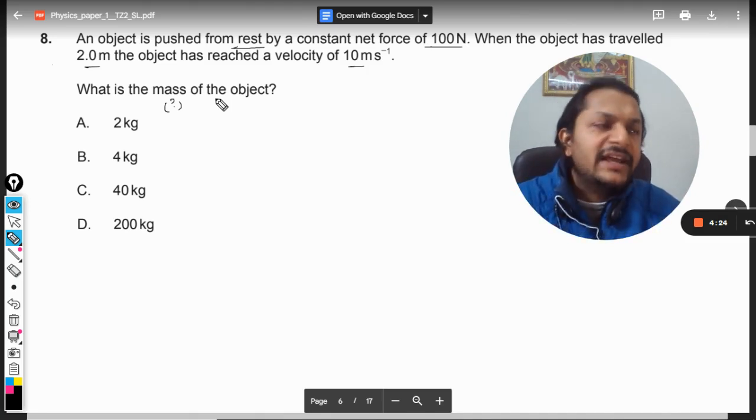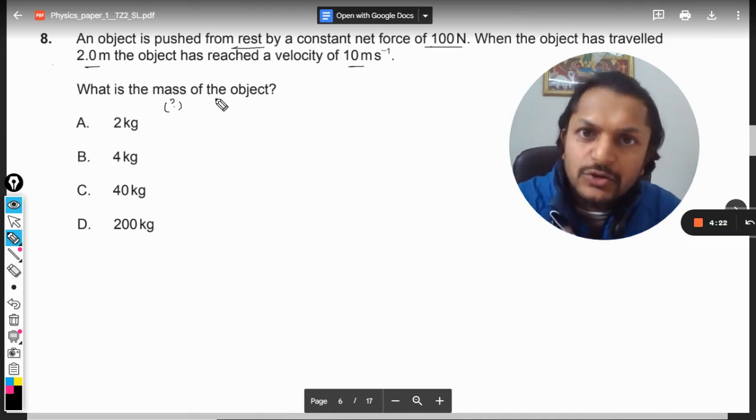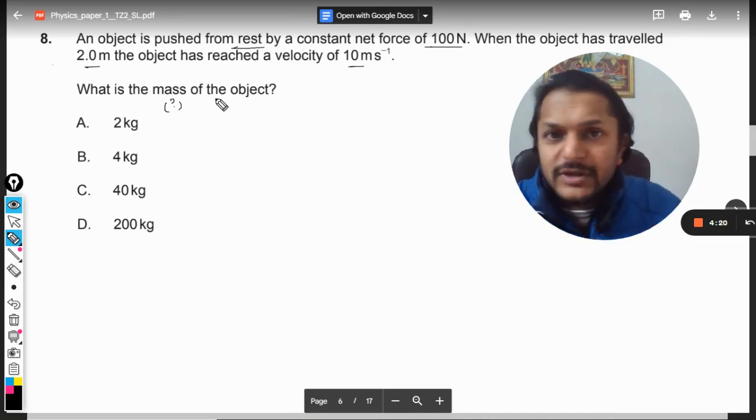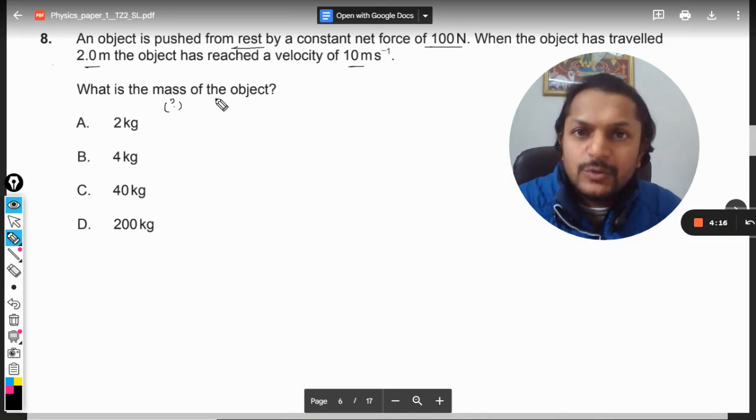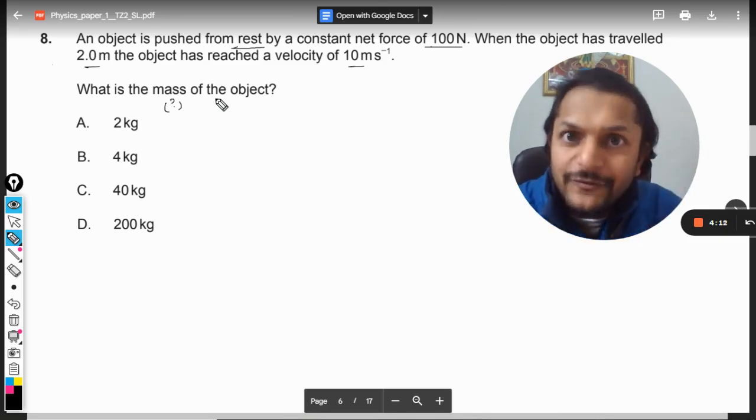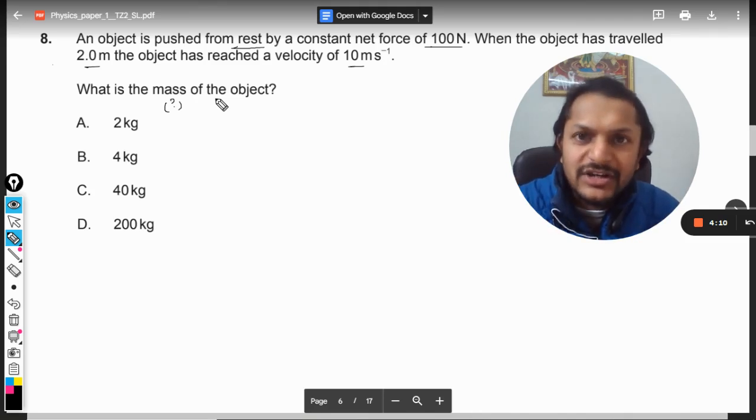What I mean is in kinematics we use three formulas: v = u + at, s = ut + ½at², and v² - u² = 2as. And in dynamics there is only one formula: F = ma. These formulas have been mixed now.